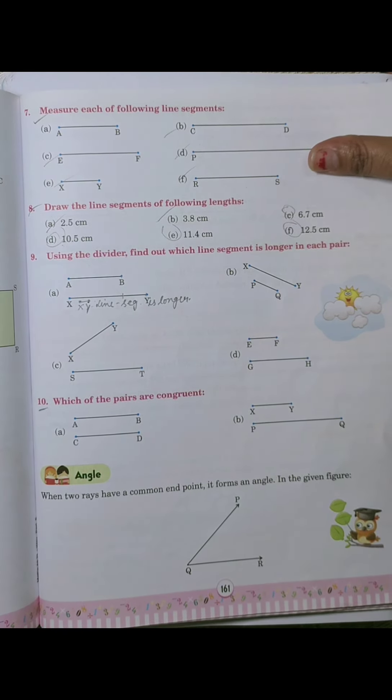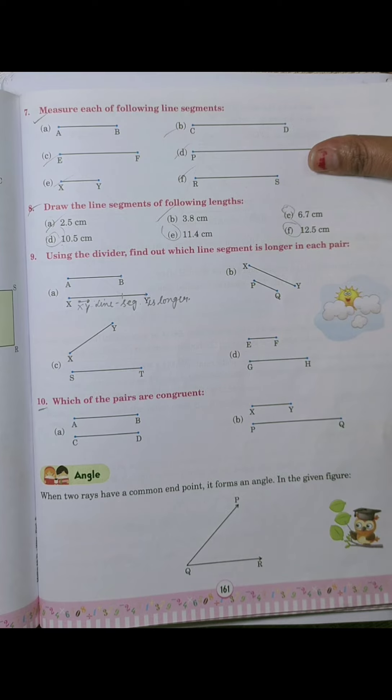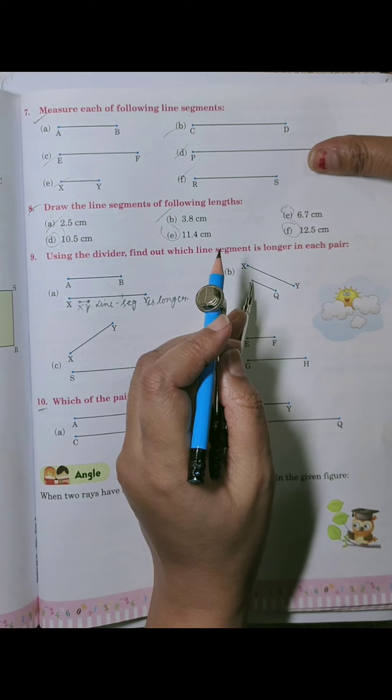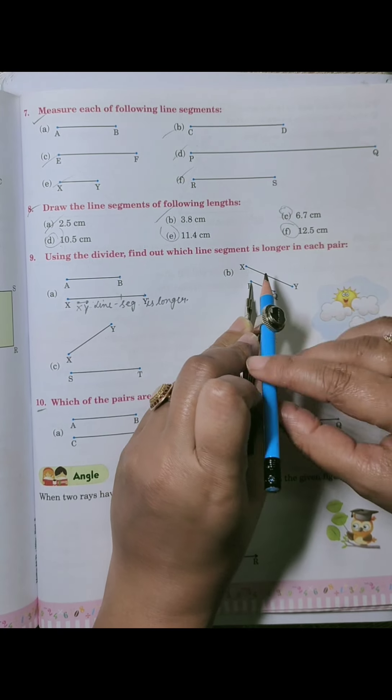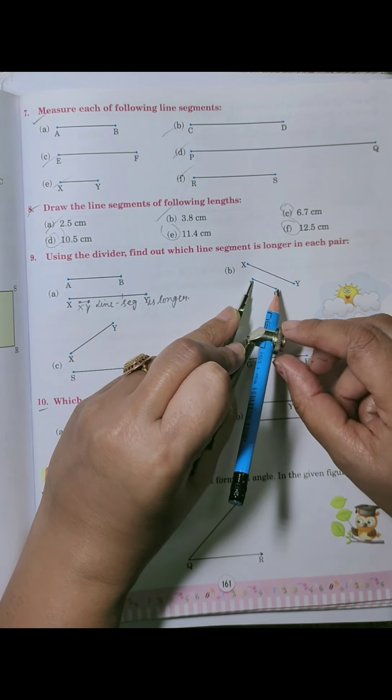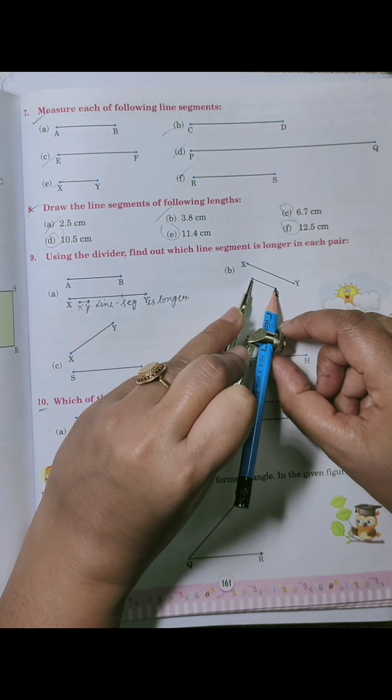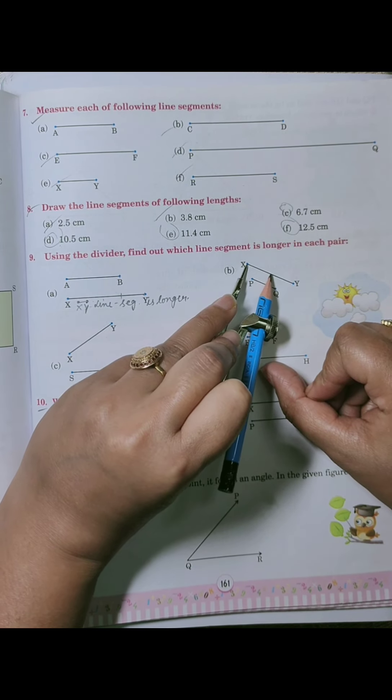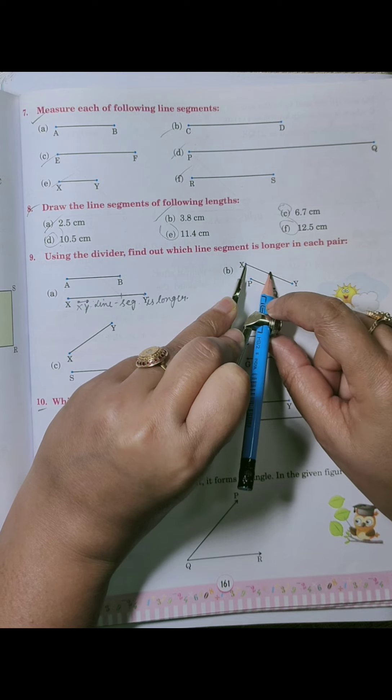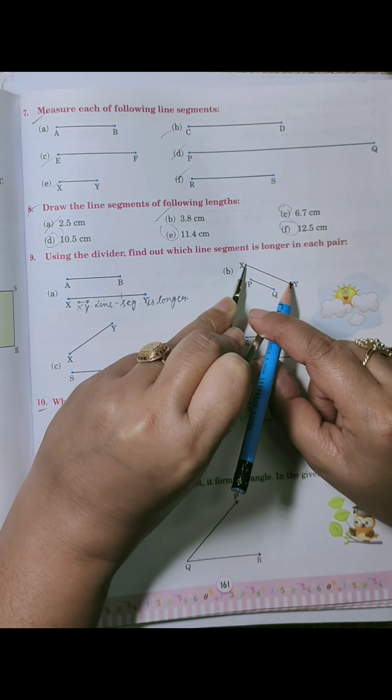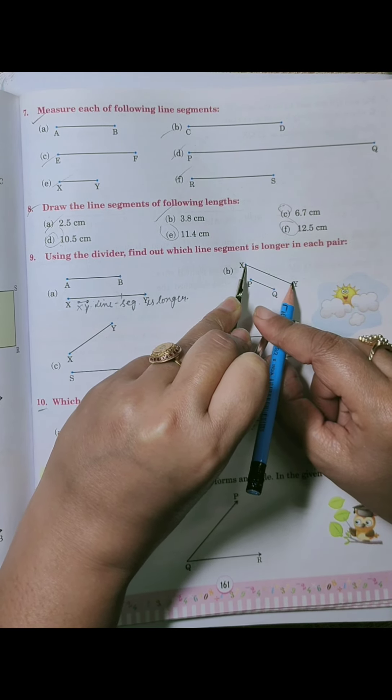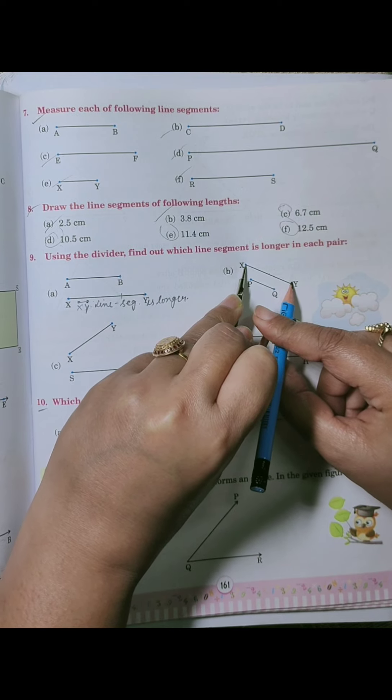If you want to do these questions in your notebook, then you can do. Second point is XY and PQ. So we have to open the compass more than in case of PQ. PQ is greater.